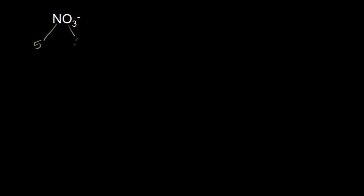Oxygen is in group 6, therefore 6 valence electrons for each oxygen. I have 3 of them, so 6 times 3 is 18 valence electrons. Plus the 5 from the nitrogen gives me 23. And I have a negative charge — this is an anion — so we have to add one electron to that. So 23 plus 1 gives us a total of 24 valence electrons that we need to represent in our dot structure.